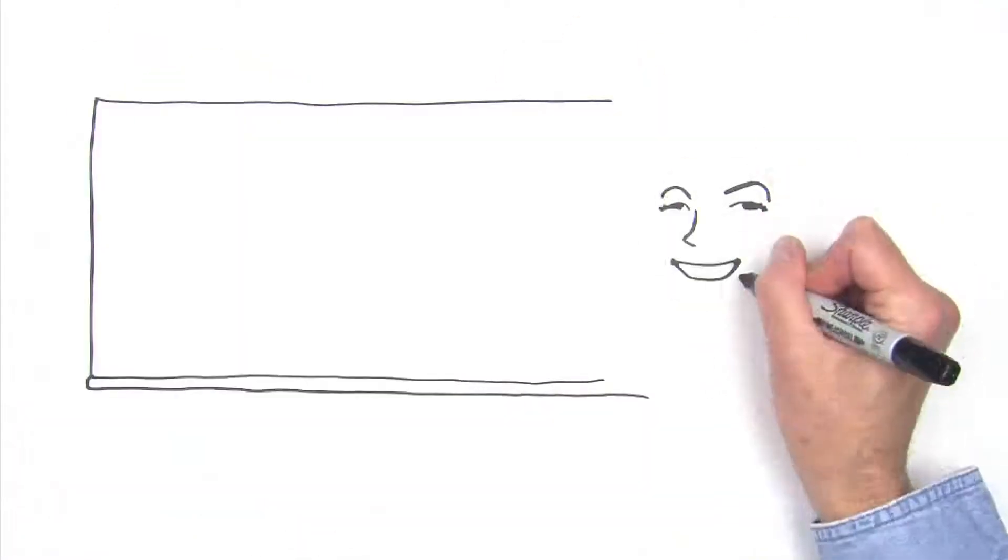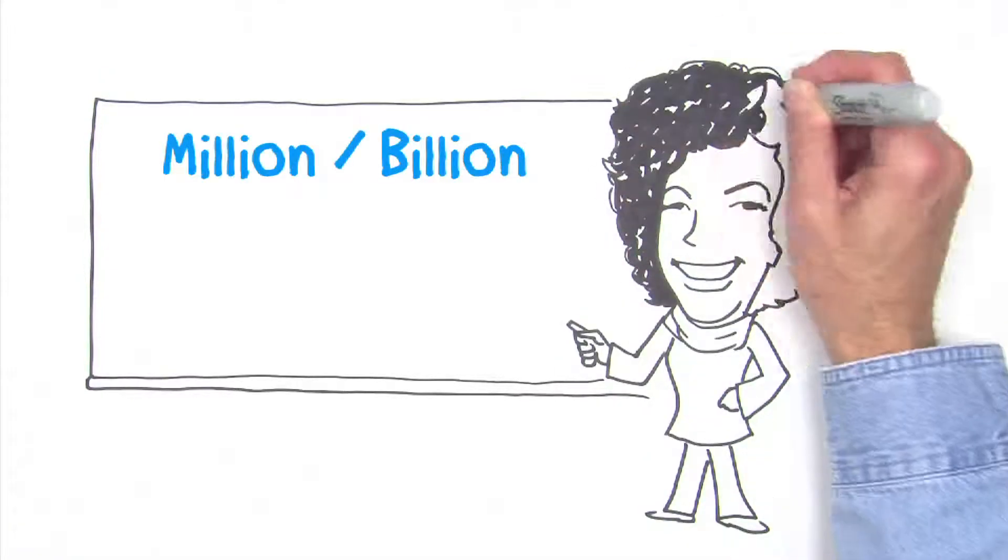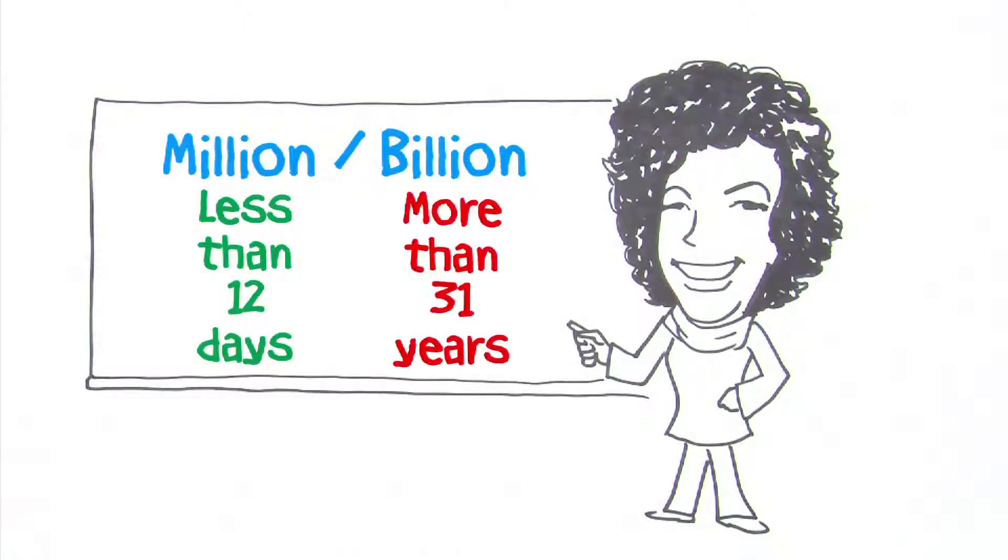Ms. Matthews continues, do most of you confuse a million and a billion because they're both big numbers? While everyone nods, she says, well, a million seconds is less than 12 days, but a billion seconds is more than 31 years.